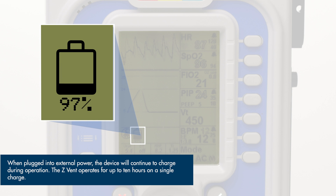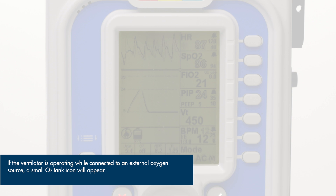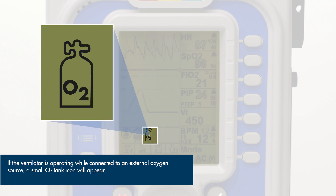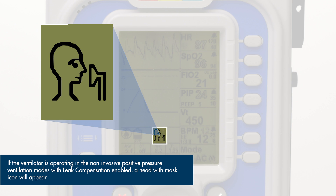The Z-VENT operates for up to 10 hours on a single charge. If the ventilator is operating while connected to an external oxygen source, a small O2 tank icon will appear. If the ventilator is operating in the non-invasive positive pressure ventilation modes with leak compensation enabled, a head with mask icon will appear.